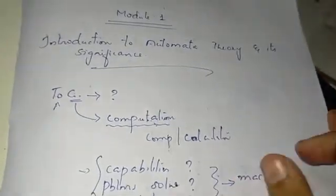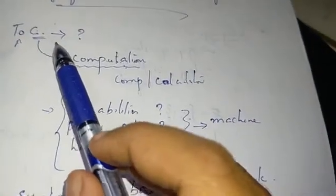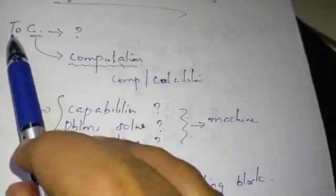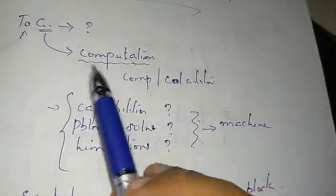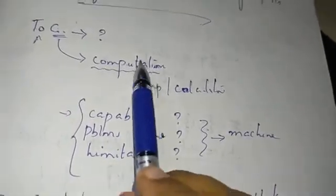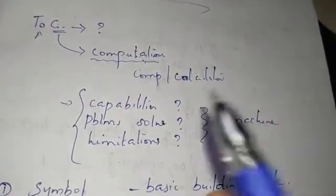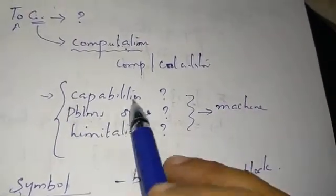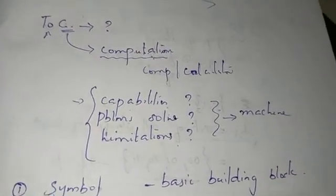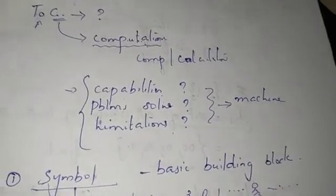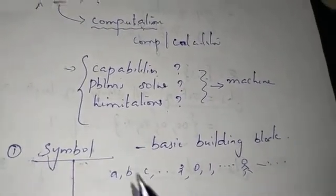So what are we going to talk about? Let's talk about TOC — Theory of Computation. When we talk about computation, we will perform a task. We are going to study the theory of computation. What are the capabilities of the machine? What are the limitations of the problem? TOC is a basic building block: symbol, alphabet, string, and language.